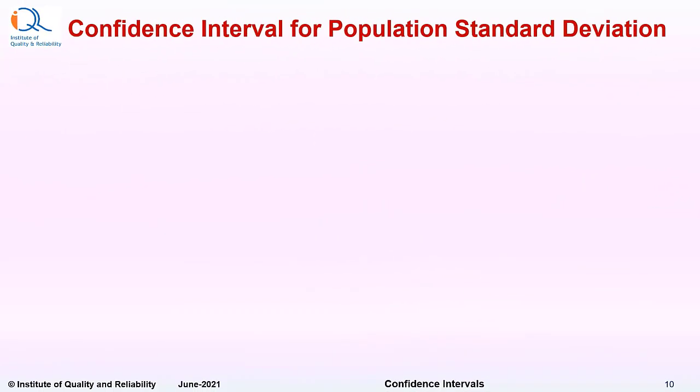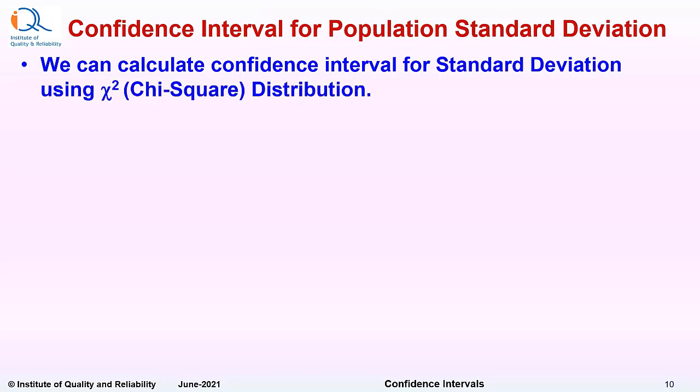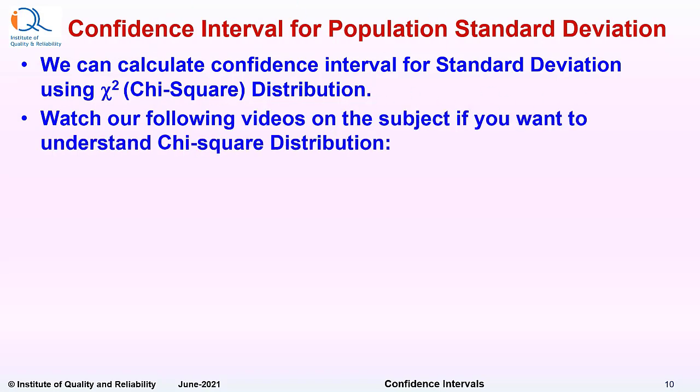Now let us see how to calculate confidence interval for population standard deviation when we know sample standard deviation with sample size n. We can calculate confidence interval for standard deviation using chi-square distribution.